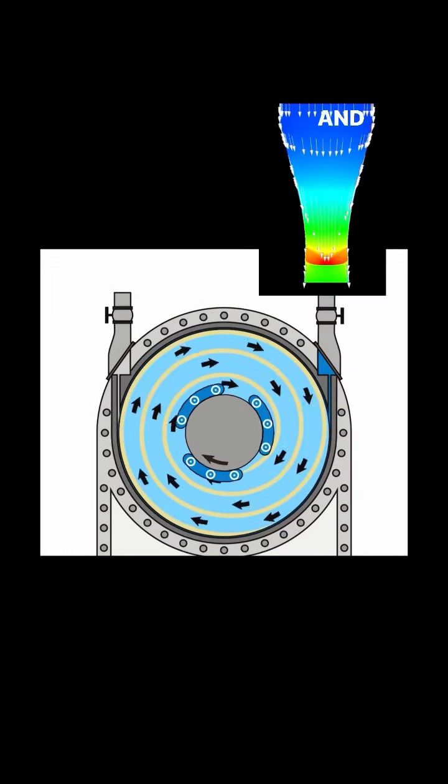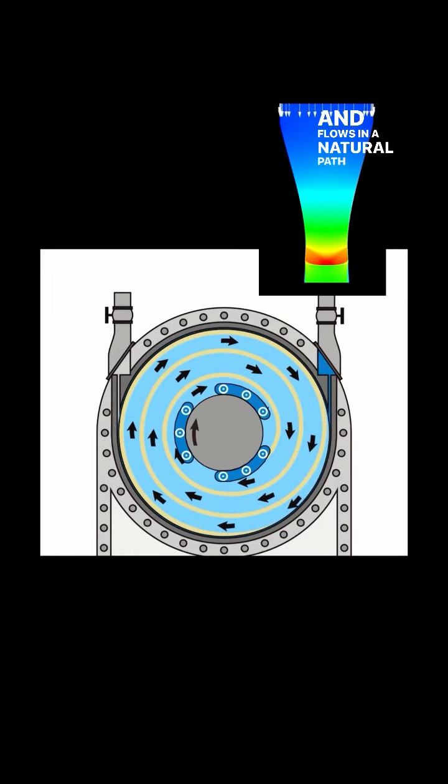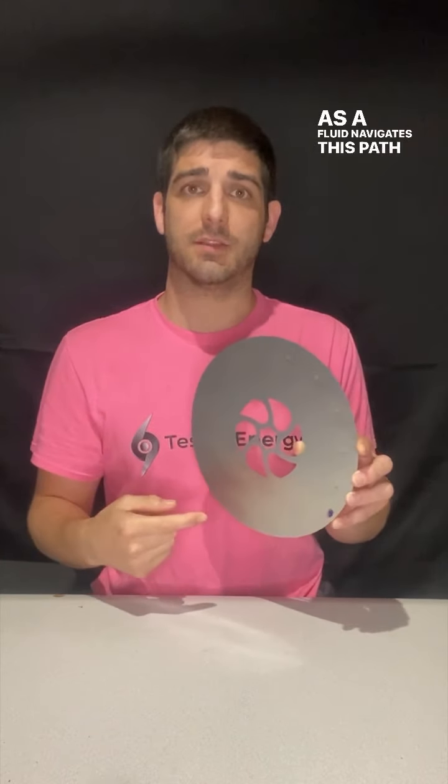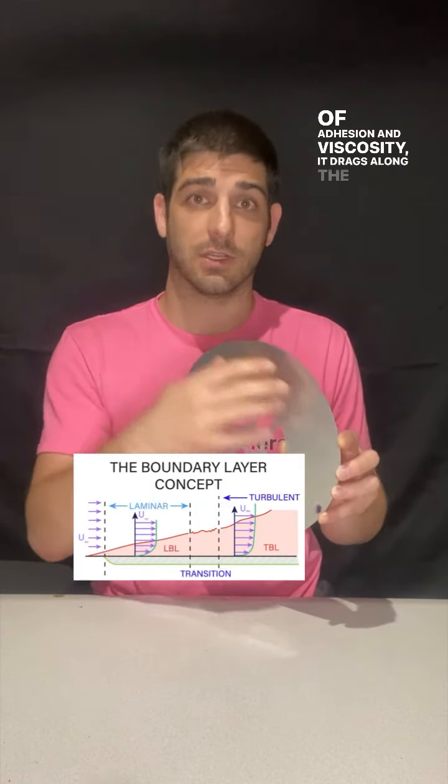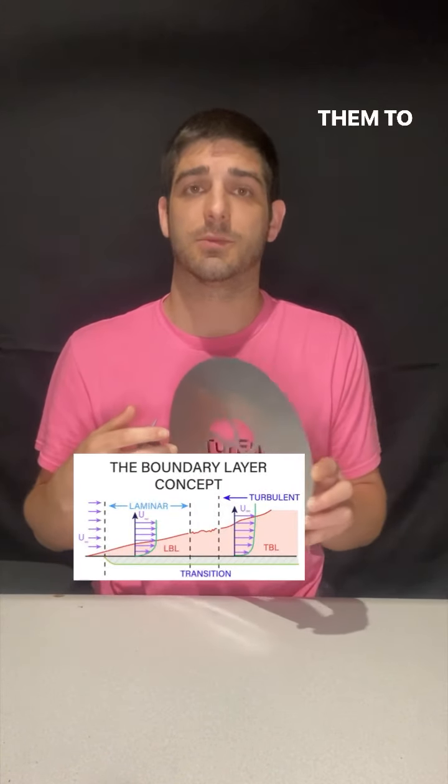In operation, a fluid — be it gas or a liquid — enters the turbine and flows in a natural path between the discs. As the fluid navigates this path, due to its natural properties of adhesion and viscosity, it drags along the discs, causing them to rotate.